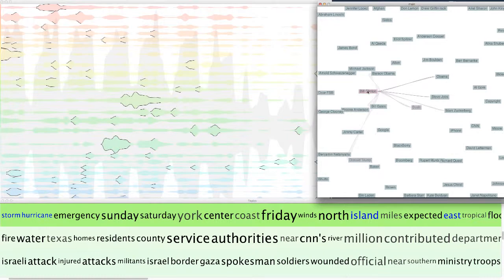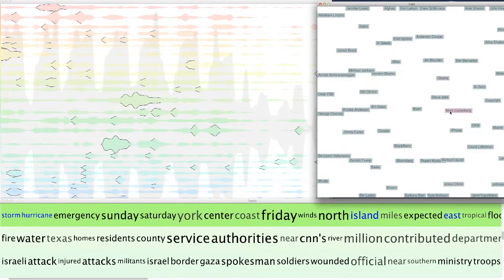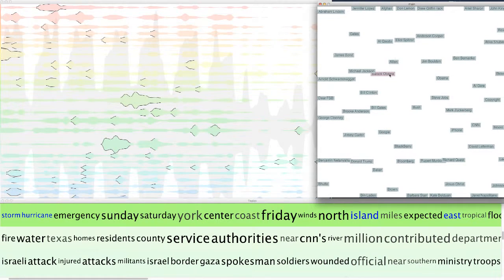After gaining an overview of the corpus from the topics, the user can also browse named entities such as people mentioned in the news. Clicking on an individual entity in the graph shows other entities that are frequently associated with the entity of interest.